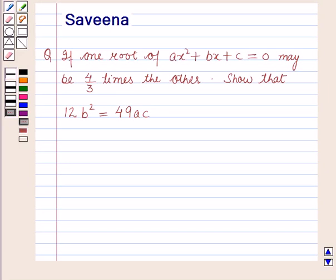Hello and welcome to the session. In this session we will discuss a question which says that if one root of ax² + bx + c = 0 is 4/3 times the other, show that 12b² is equal to 49ac.